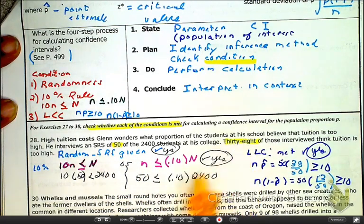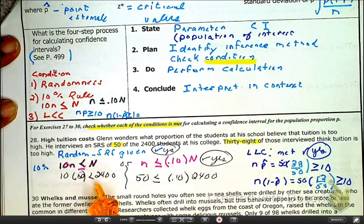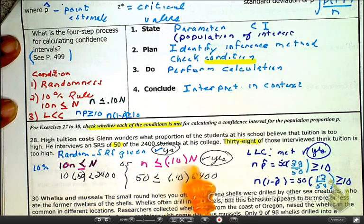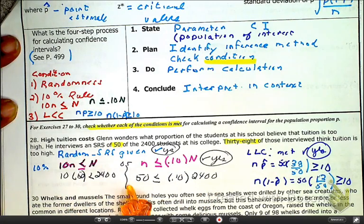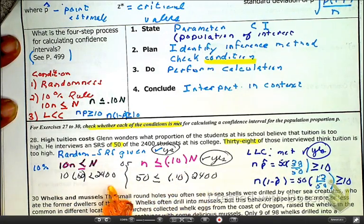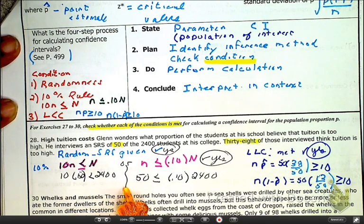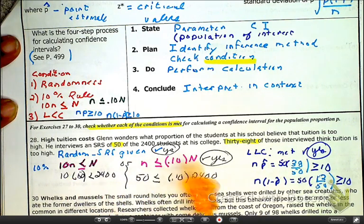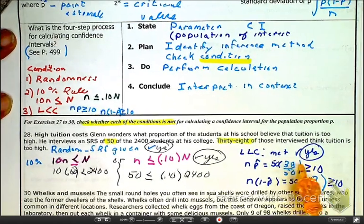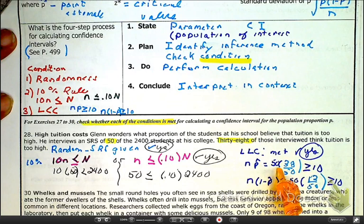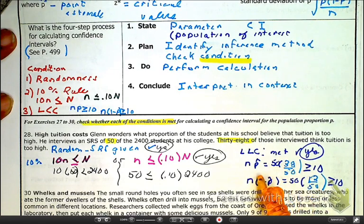Our 10% condition, our 10%, whether you're looking at a 10% of the entire population or 10 times the sample size, in both of those cases, it is going to be greater than, it is going to be true. So, therefore, yes, the 10% condition has been met. And then the last one, our large count condition. Remember, these are proportions, so N times the probability of success of the sample.